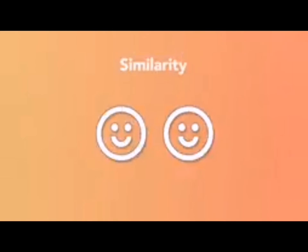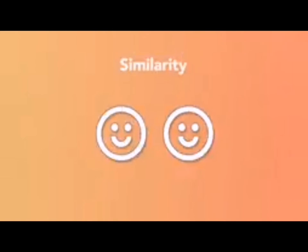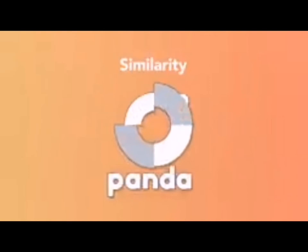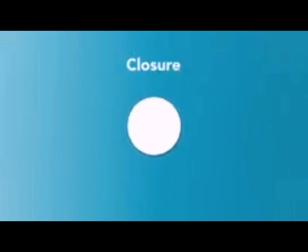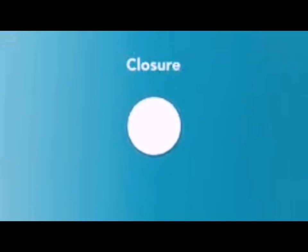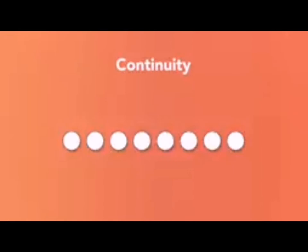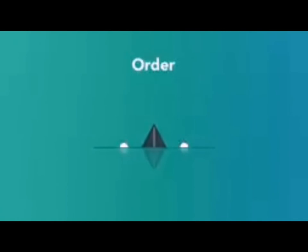Similarity: the notion that we place objects with similar characteristics in a group. These characteristics can include color, size, font, shape, texture, and more. Proximity: the belief that we group together objects that are close to each other. Closure: the idea that our minds close objects that are not necessarily together or complete in order to create a whole. Continuity: the theory that we continue to follow objects that are visually aligned until they are interrupted. Order: the belief that alignment and symmetry are attractive and essential elements of design.